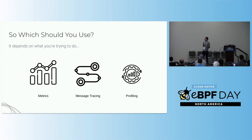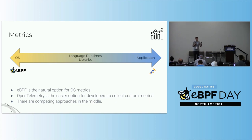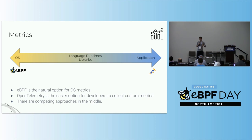We're going to cover three topics: metrics, message tracing, and profiling. In terms of metrics, there's a spectrum from OS-level observability all the way up to the application layer. If you're looking for OS-level stats - things like CPU utilization, memory - obviously eBPF is the place to go. You're not typically going to use OpenTelemetry for those because that's the domain of the operating system. At the other end of the spectrum, if you're very high up in the application layer and want to collect statistics, it makes sense to instrument with OpenTelemetry.